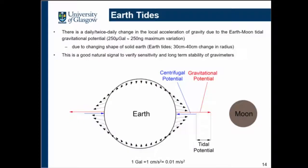The first thing we measured was earth tides. These are created by the gravitational pull of the Earth and Moon, and they occur once or twice daily depending on the phase of the Moon. Earth tides can actually change the radius of the Earth by three centimeters, so wherever you are measuring your local g, you are moving by three centimeters. Earth tides are very good natural signals to validate your gravimeters, because you need both high sensitivity and long-term stability to continuously monitor them.